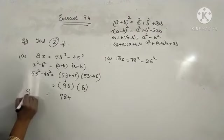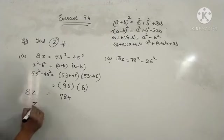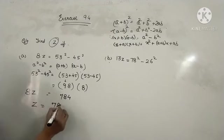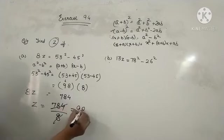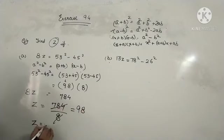Now you are given 8Z is equal to 784. So Z will be equal to 784 upon 8. And you have just multiplied 98 into 8. Cancel it. It will be equal to 98. So the value of Z is 98. Similarly, we will proceed in part B.